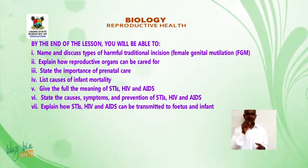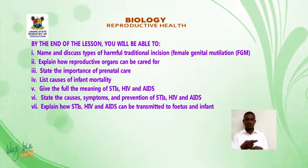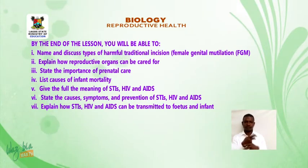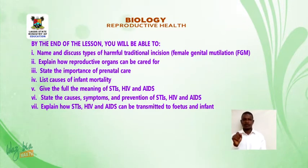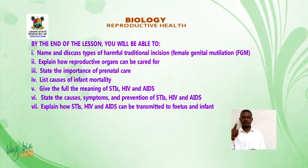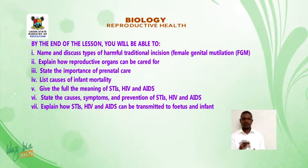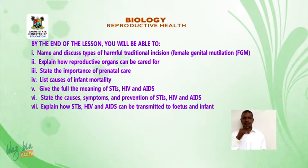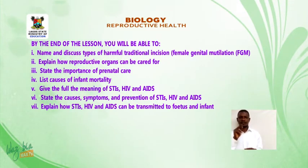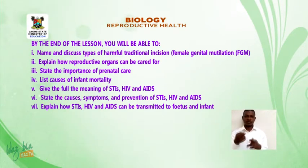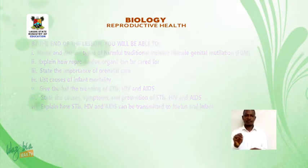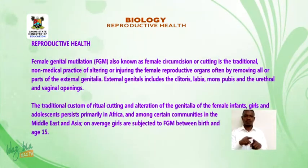You will also be able to explain how reproductive organs can be cared for, state the importance of prenatal care, list causes of infant mortality, give the full meaning of STIs, HIV and AIDS, state the causes, symptoms and prevention of STIs, HIV and AIDS, and explain how STIs, HIV and AIDS can be transmitted to the foetus and infant.